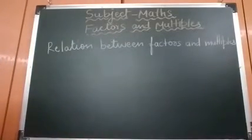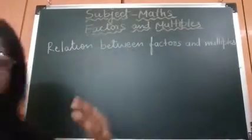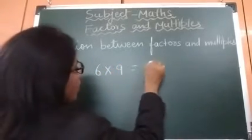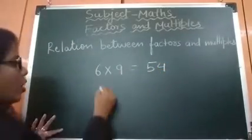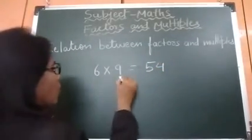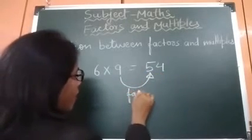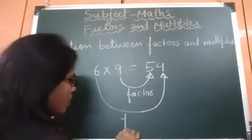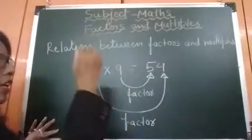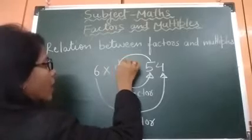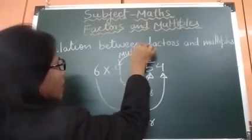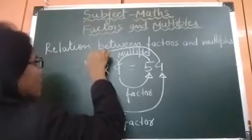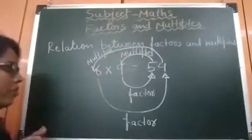Now we will see the relation between factors and multiples. For example, 6 multiplied by 9 is equal to 54. Here, the numbers on the left side — 6 and 9 — are factors of 54. And in another manner, 54 is the multiple of 9, and 54 is the multiple of 6.